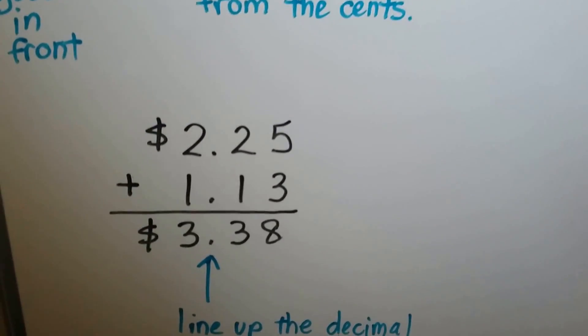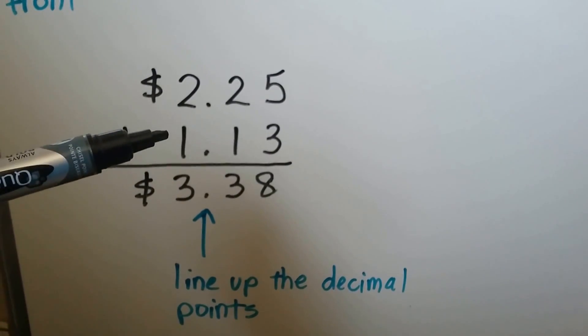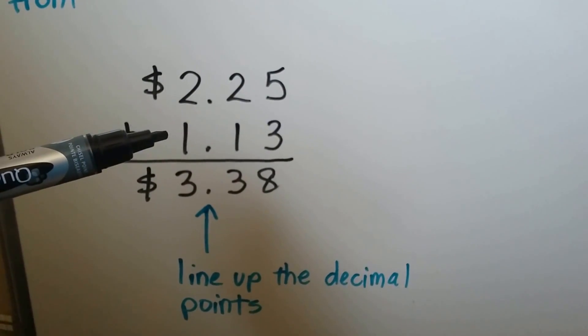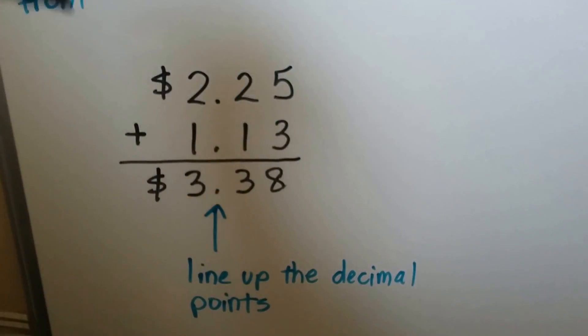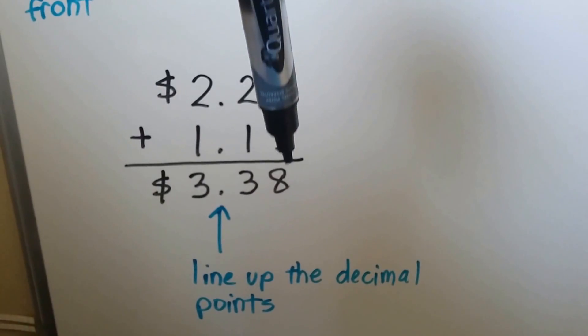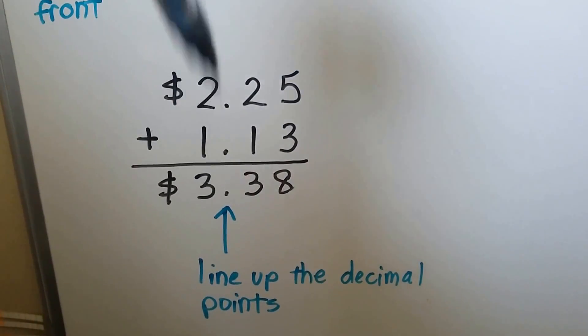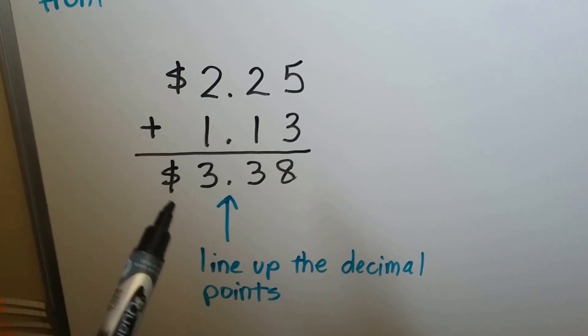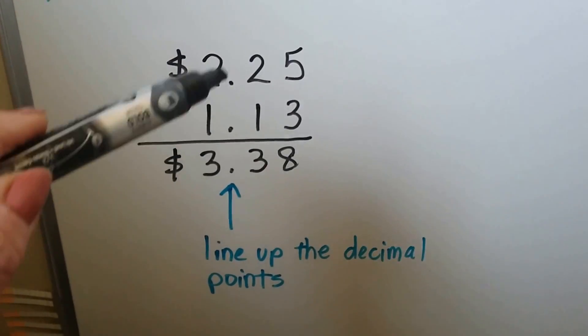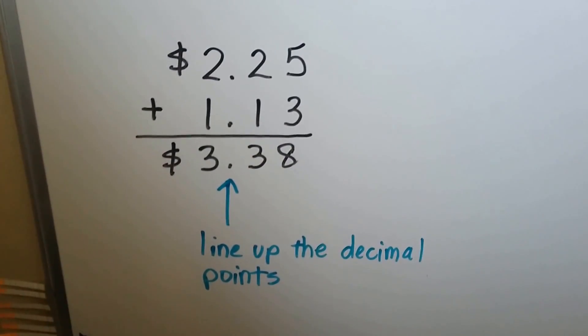If we add $2.25 plus $1.13, we add coming straight down just like we would if we were adding hundreds. 5 plus 3 is 8. 2 plus 1 is 3. 2 plus 1 is 3. We write our dollar sign and line all of our decimal points up nice and straight on top of each other.